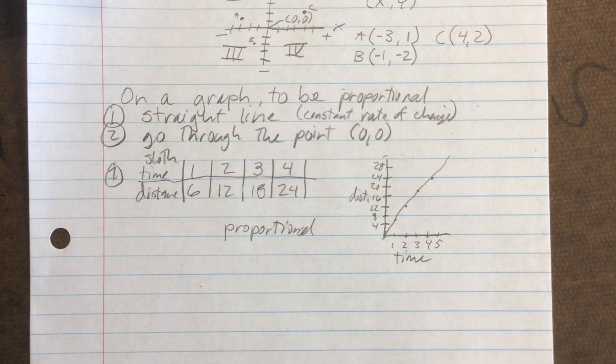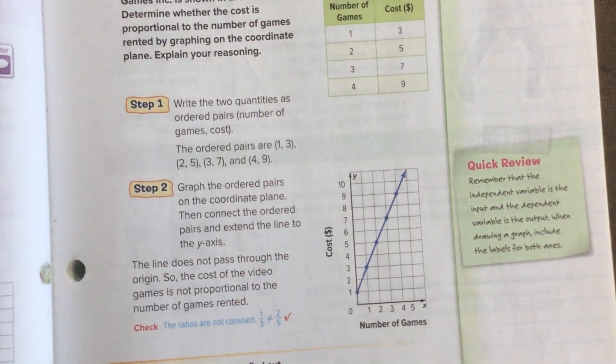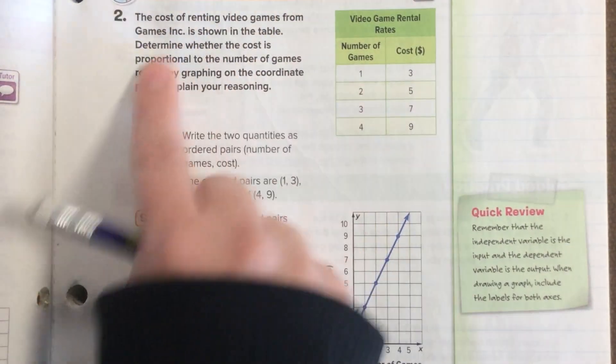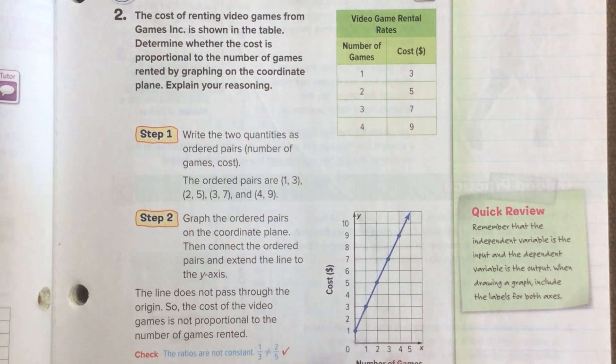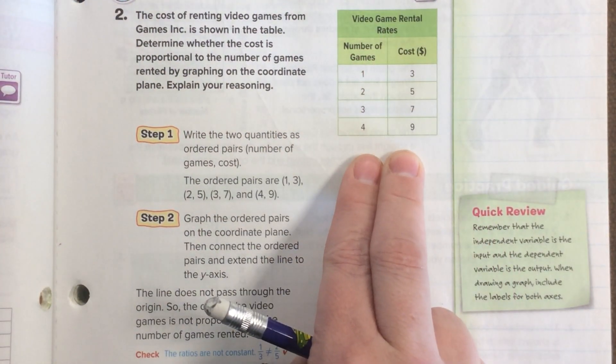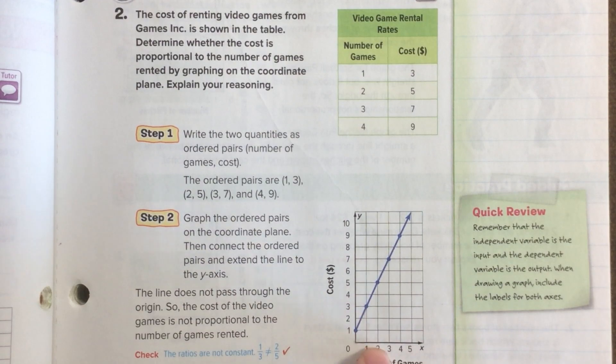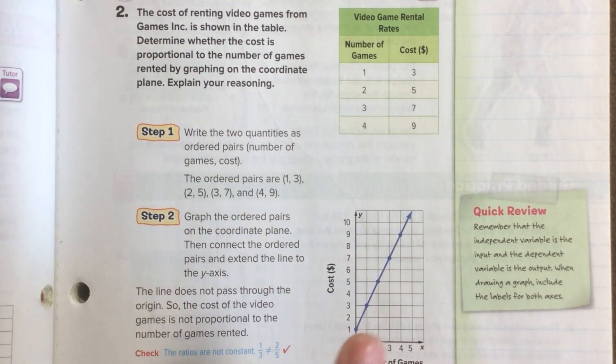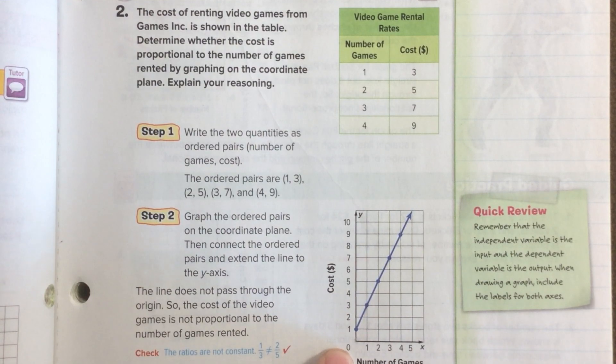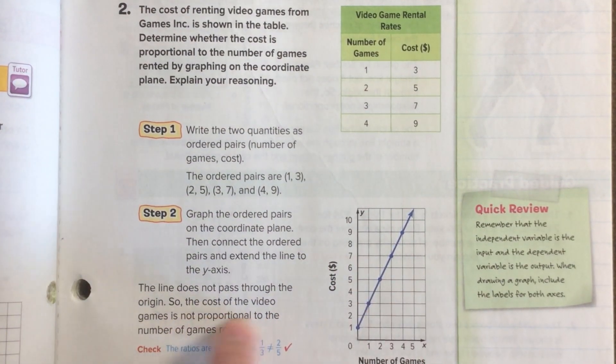And that's basically what we're doing. Let's look at one more. We're renting video games. So, if we rent one game, it costs three dollars. Two games is five dollars. Three games is seven. Four is nine. So, if those become our points, and we get these ordered pairs, then we can graph these points. And so, one is at three. Two is at five. Three is at seven. And so on. So, we graph them. It makes a straight line, so that's good. But what's the problem on this one? It does not go through the point zero, zero. And because of that, this is not a proportional relationship.